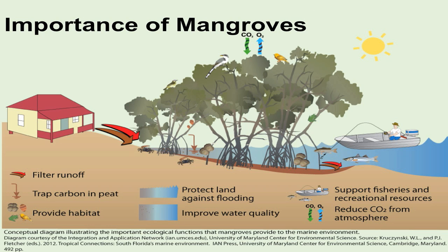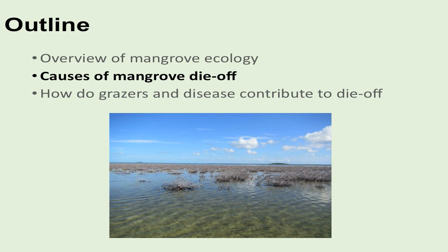Why am I talking to you about mangroves? They're really important — they provide us a lot of services that we rely on, like filtering runoff, sequestering carbon, and providing habitat for important marine organisms. So we really care about what's causing them to die. The next portion will go into some of the natural causes of die-off and other causes.